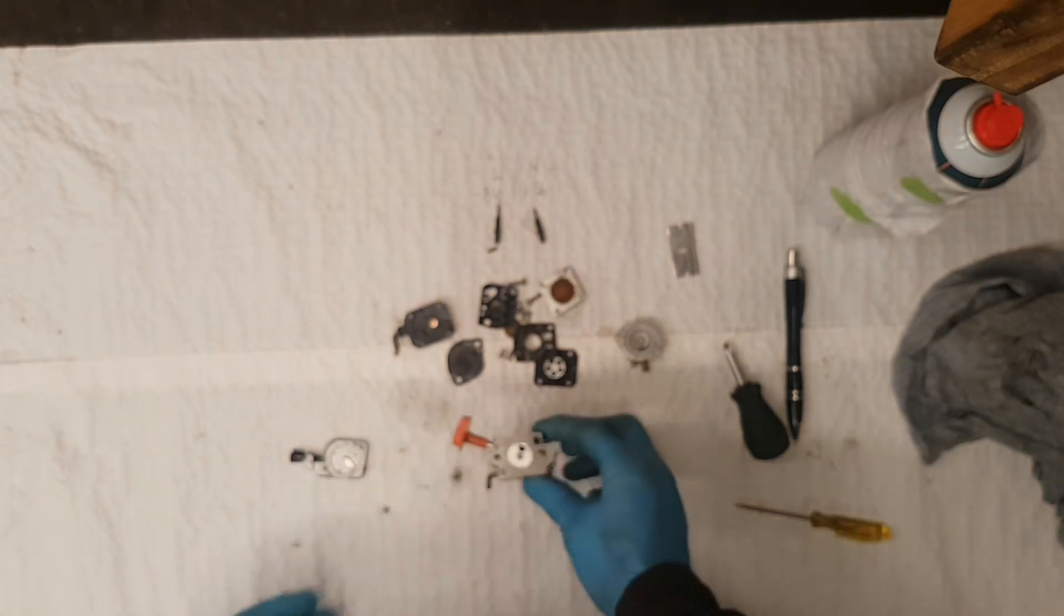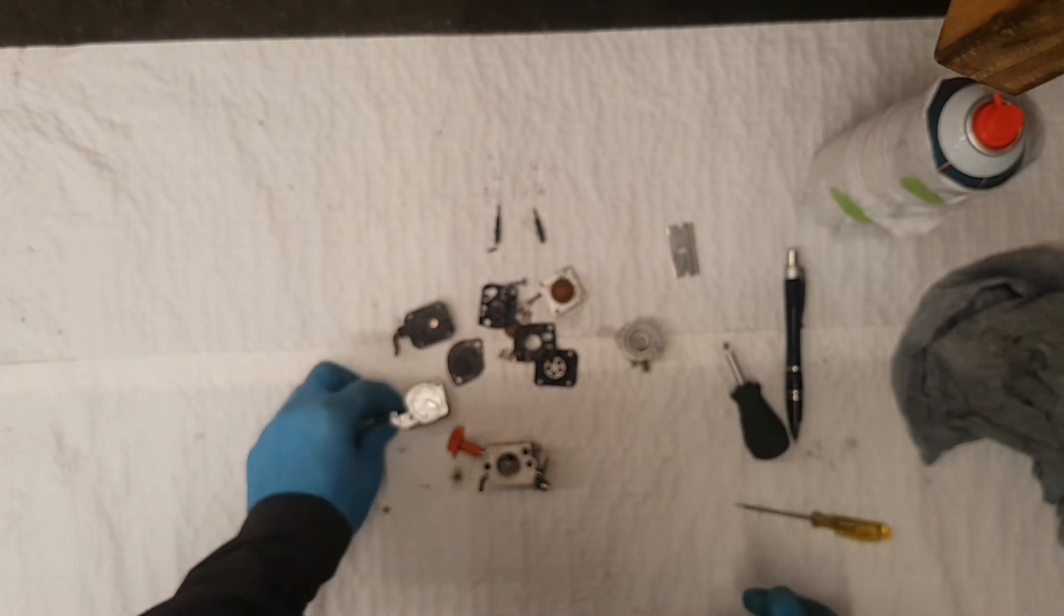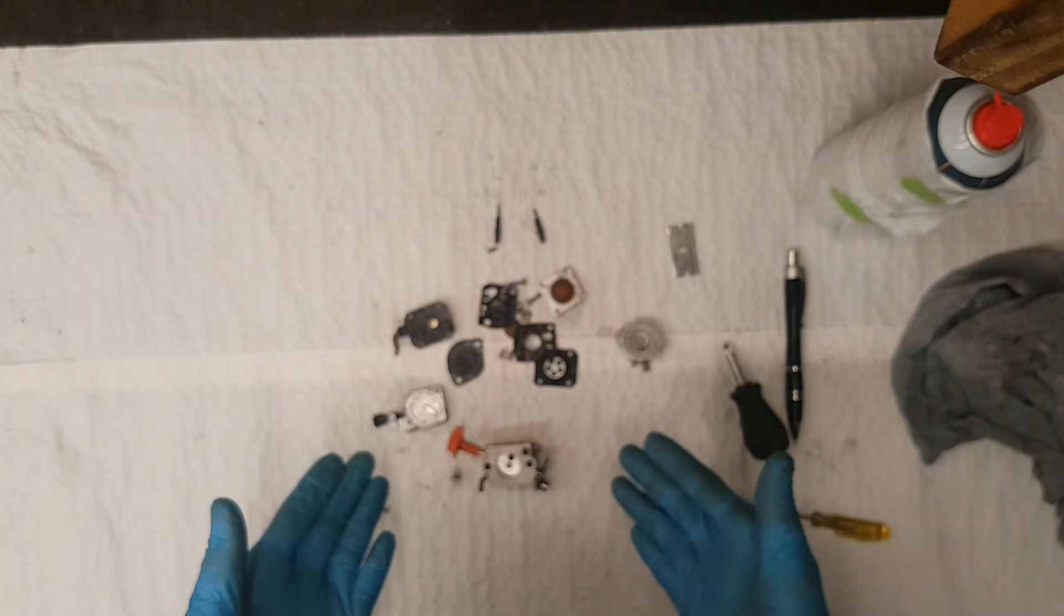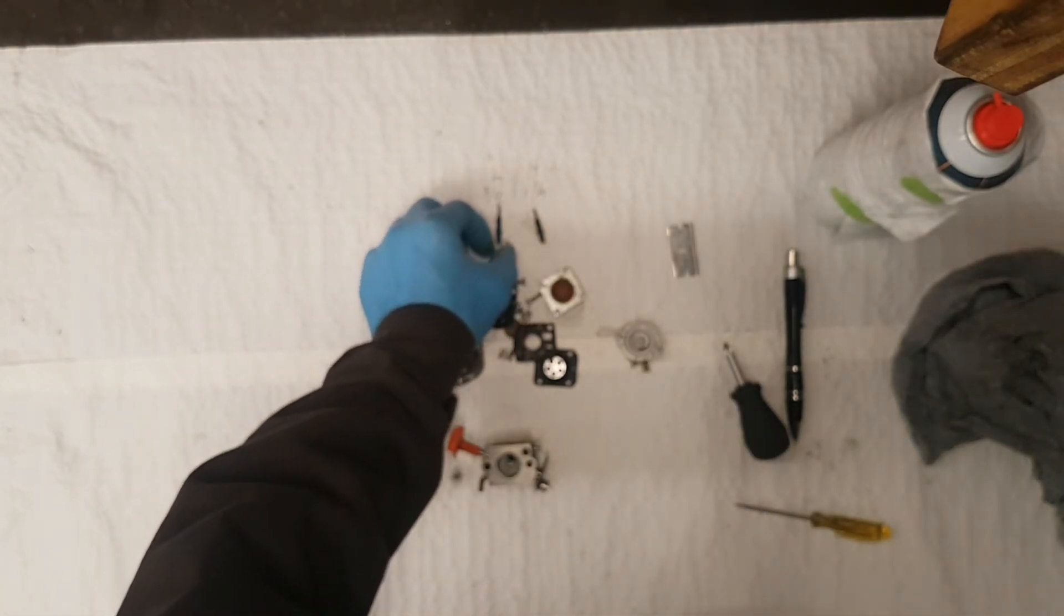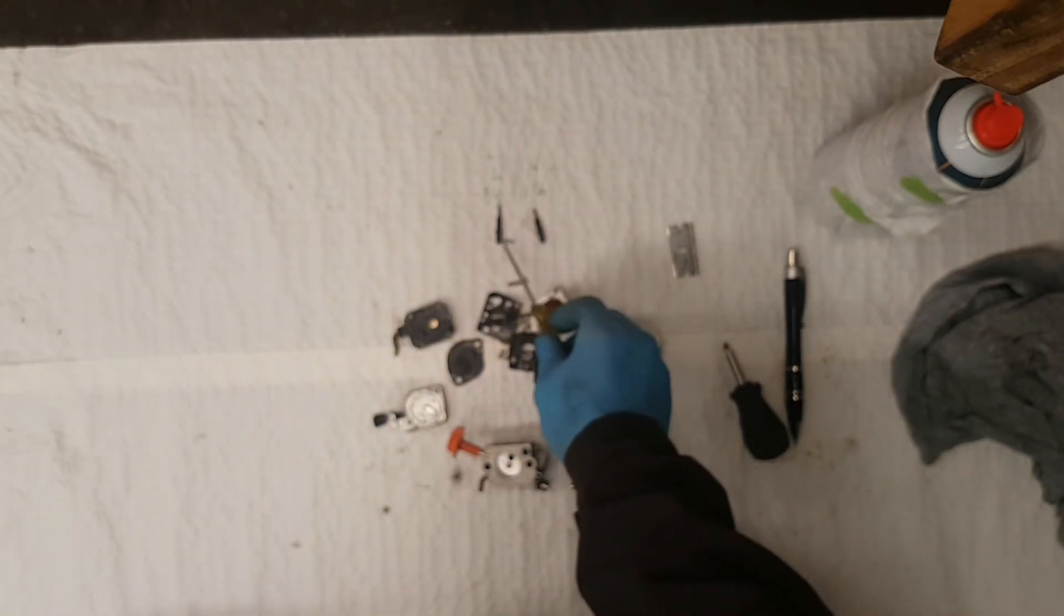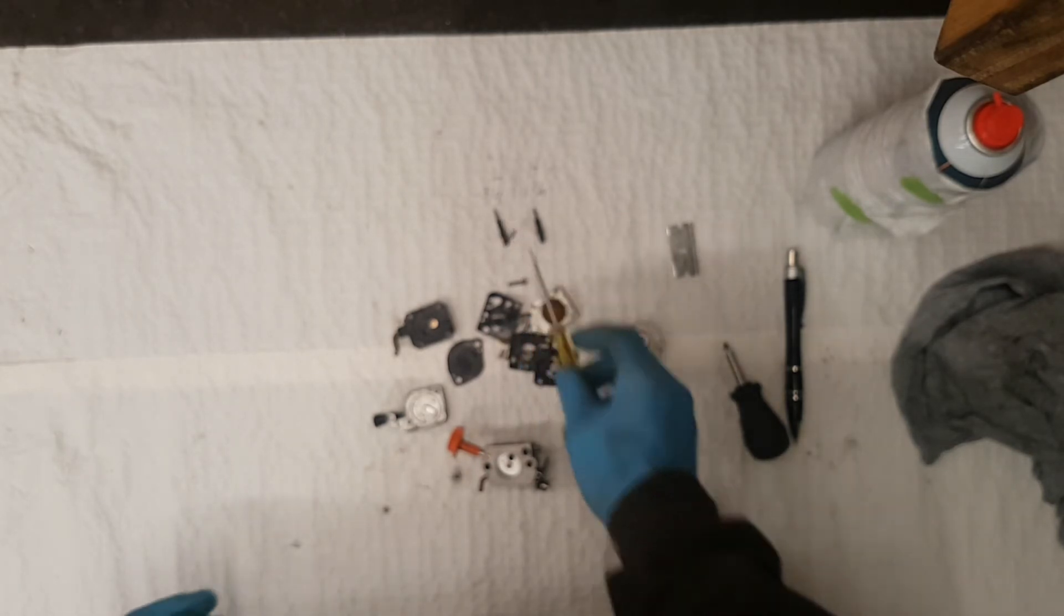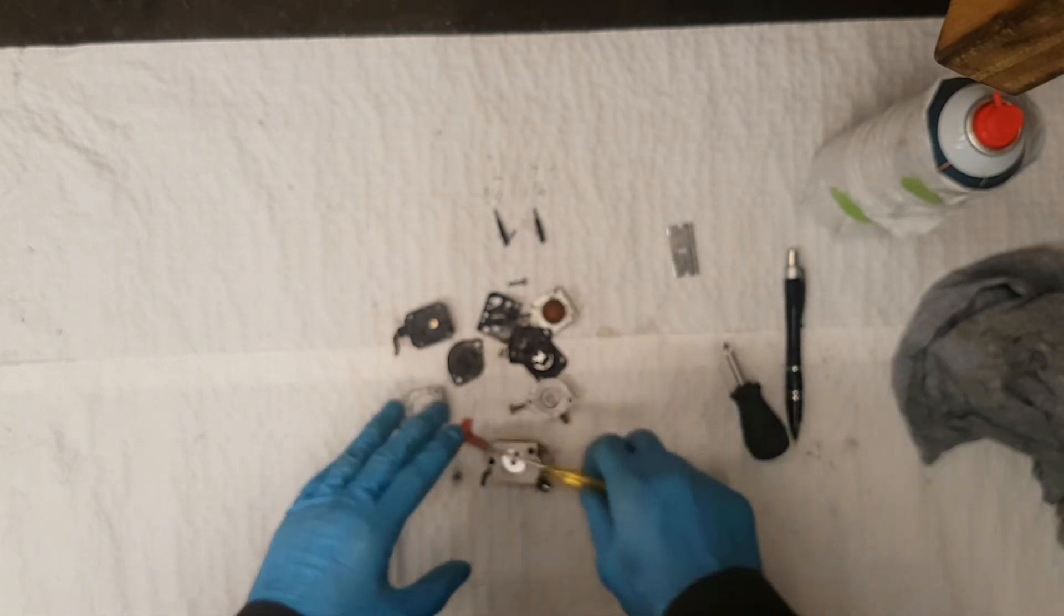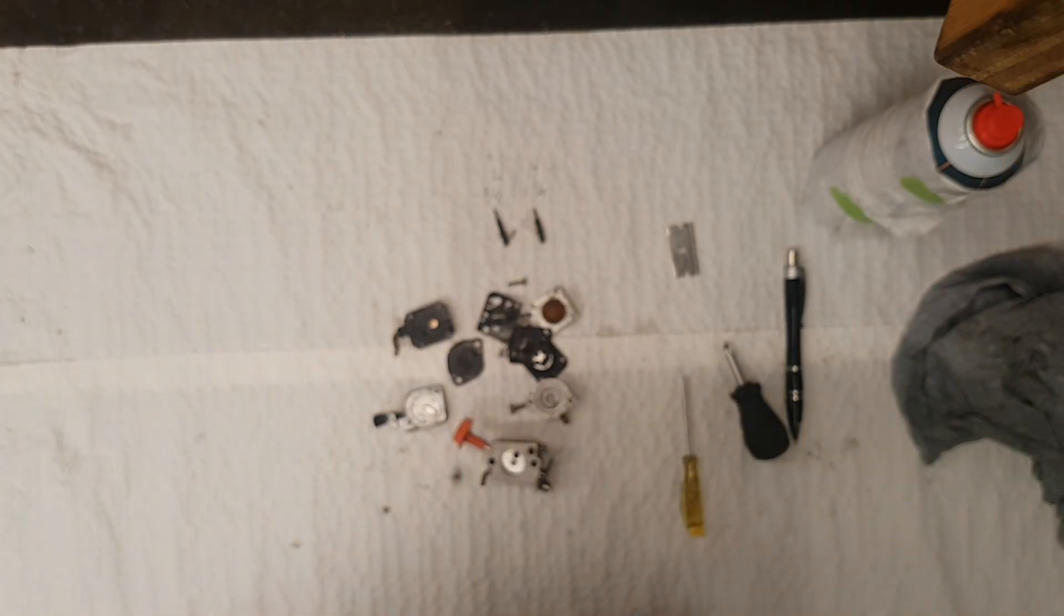So that is how you disassemble a C1Q carburetor. Now don't be alarmed, there is a lot of parts in front of us here, but like I said, I'm going to throw these into my ultrasonic cleaner. So these are the three parts that are not going to make their way in there: that's going to be your two fuel screws and the needle. But as for the rest here, all of these are going to make their way into a little container into the ultrasonic cleaner.